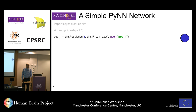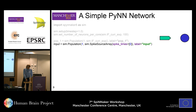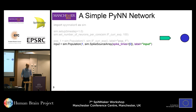SpiNNaker comes with a lot of built-in populations, ifcorex being one of them. We always suggest you give it a label for graphing later. The second population we need is our input population. In this case we're using a simple spike source array, which literally just takes an array of input times and at every time it reaches one of those times it sends a spike into the system. And again, we just gave it a label.